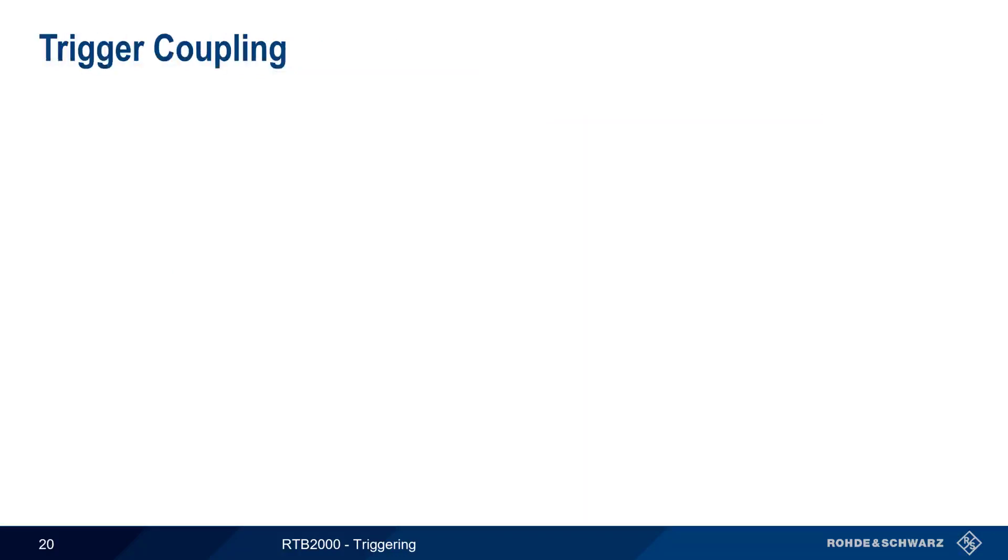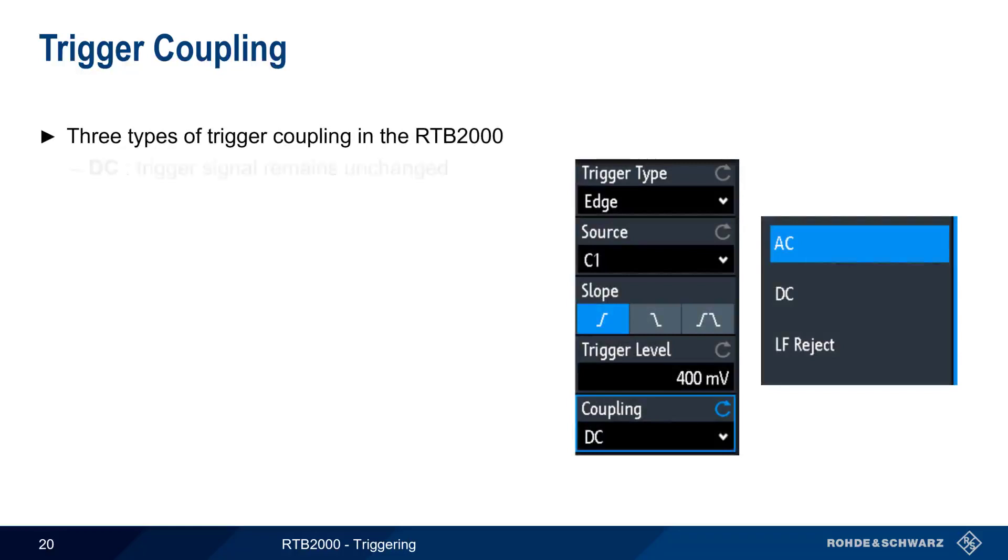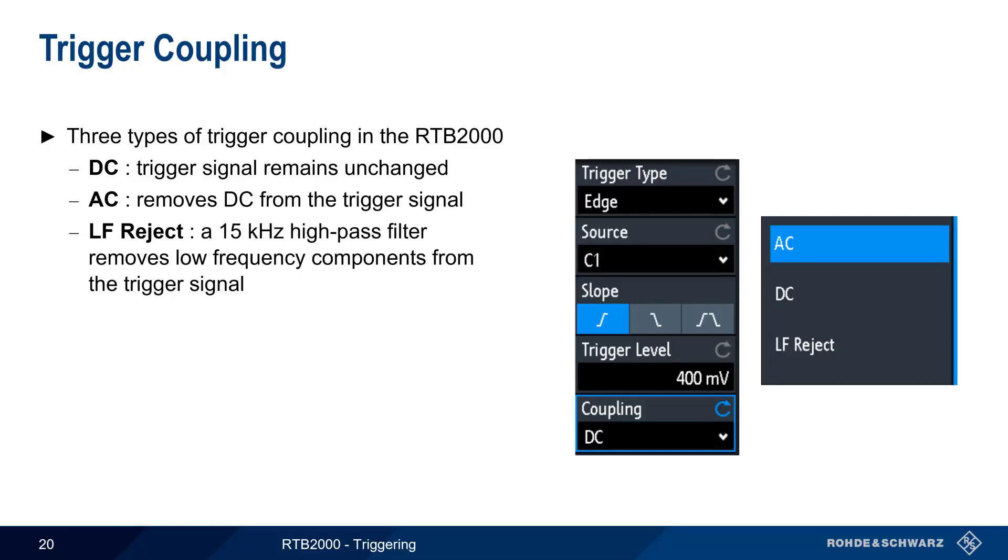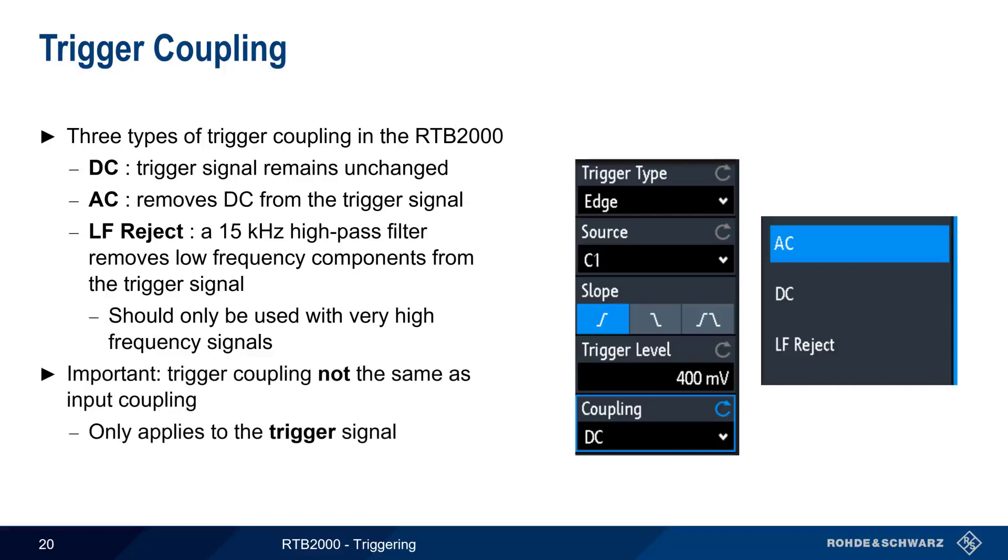Trigger coupling determines what processing, if any, is done on the trigger signal. The RTB supports three types of trigger coupling. In DC mode, the trigger signal remains unchanged, and in AC mode, any DC component is removed from the trigger. AC trigger coupling can be useful when probing a signal that has an unknown DC offset. The third option, called LF, or low-frequency reject, uses a 15 kHz high-pass filter to remove low-frequency components from a trigger signal. This should only be used for very high-frequency signals. It's important to remember that trigger coupling is not the same as input coupling. A DC-coupled input signal could have an AC-coupled trigger.